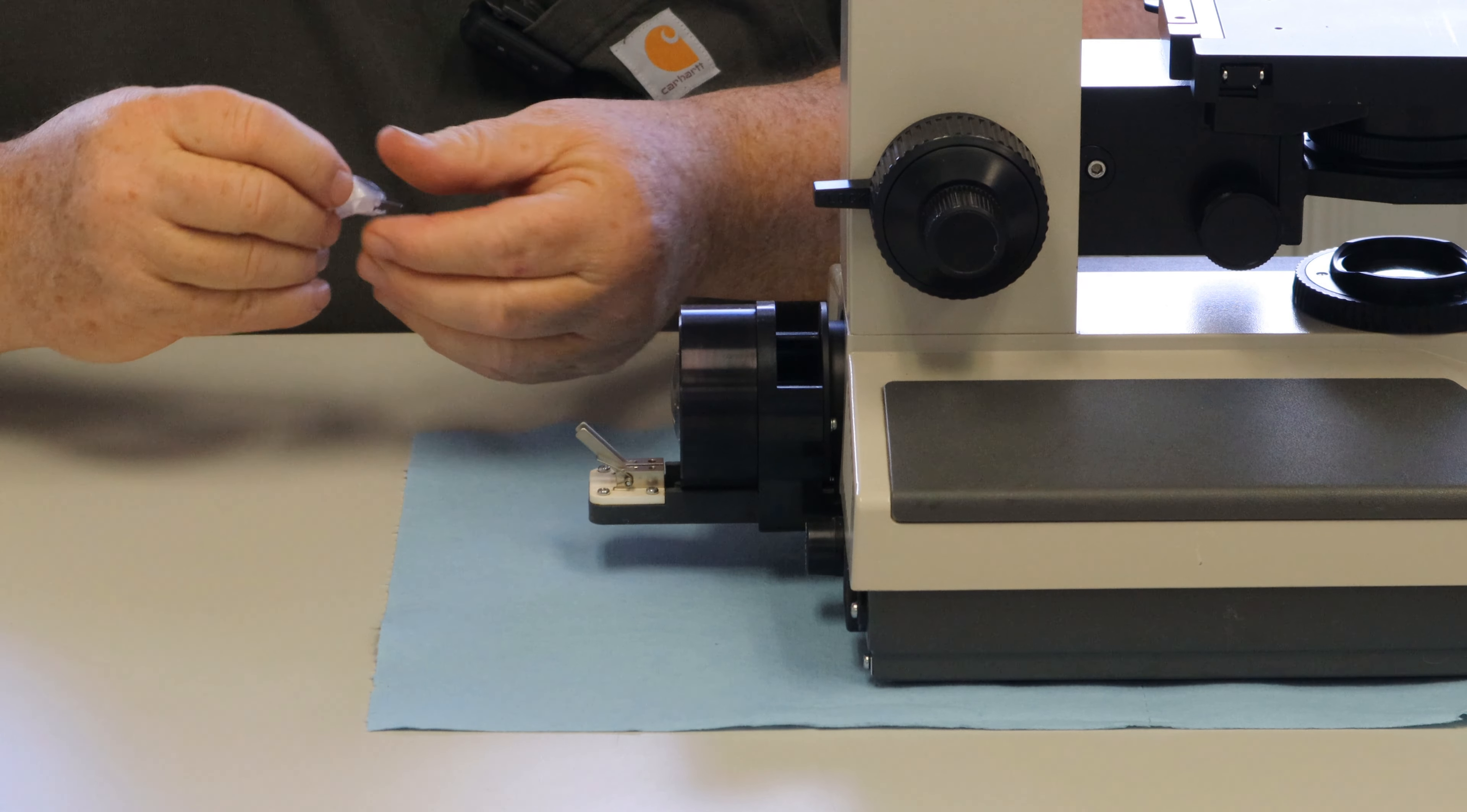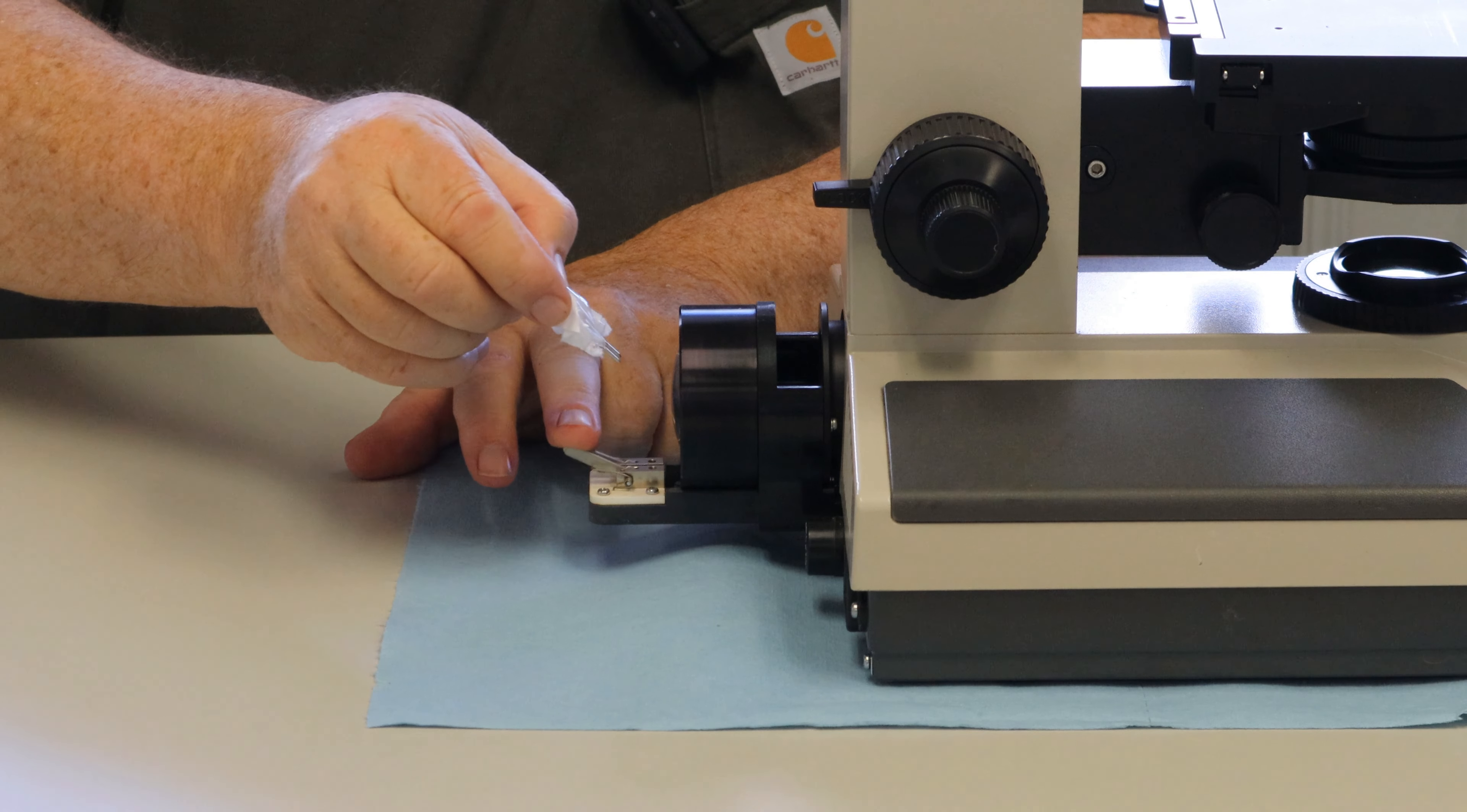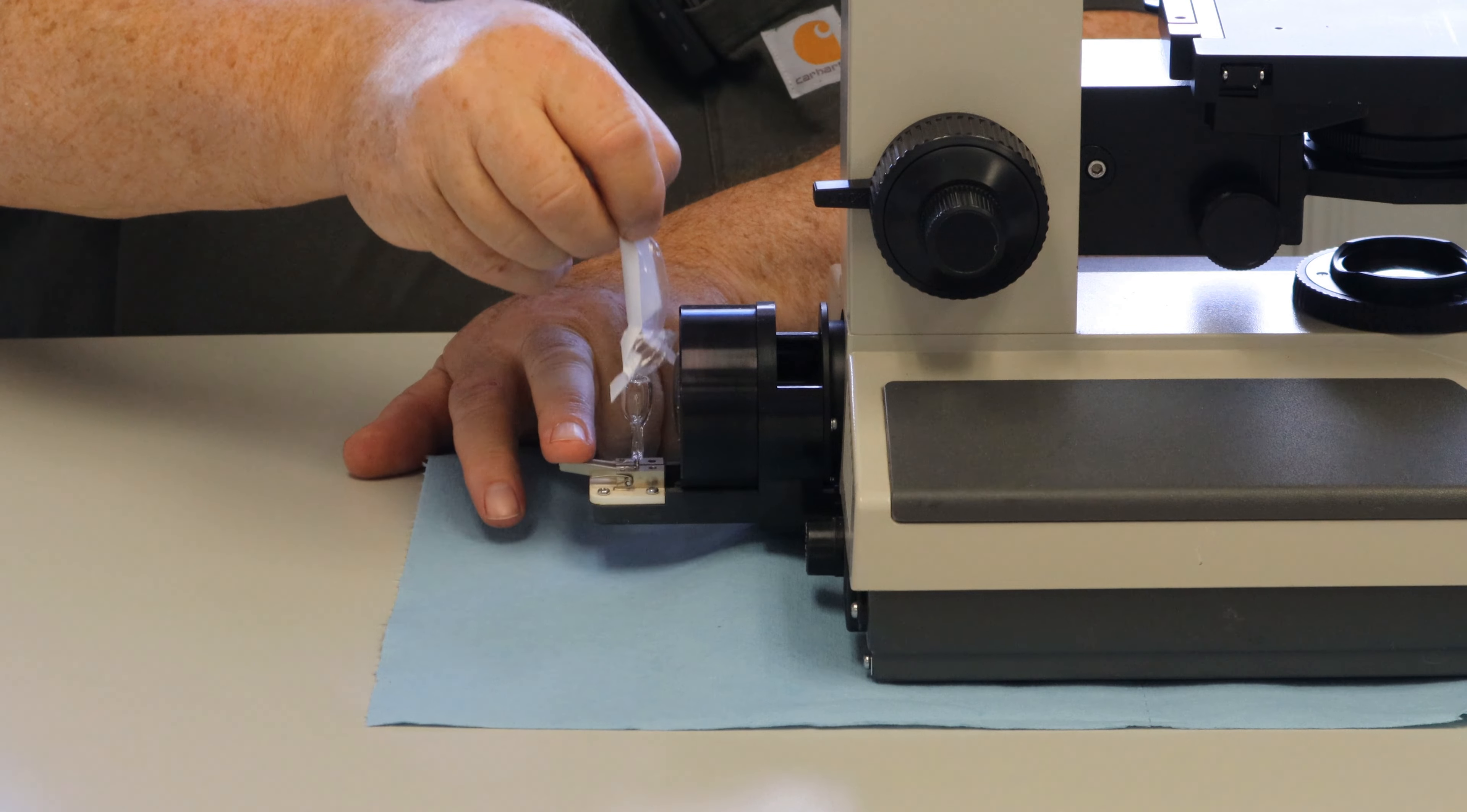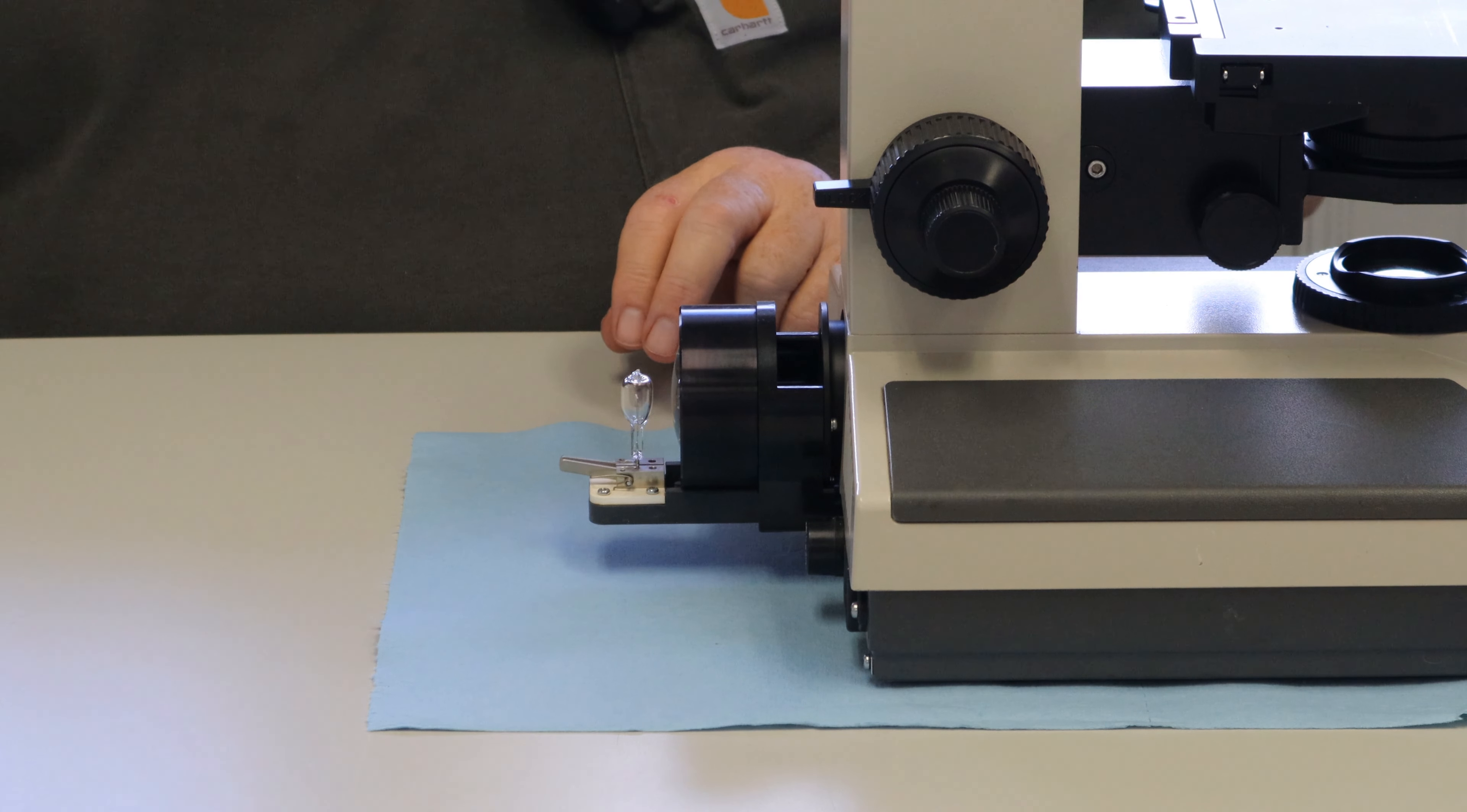If you happen to get your fingerprints on the globe, you can simply wipe it down with acetone or xylene and a chem wipe.